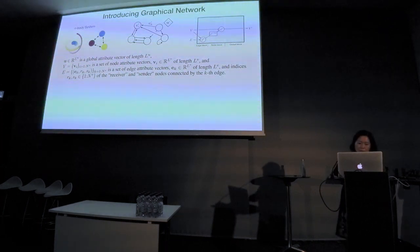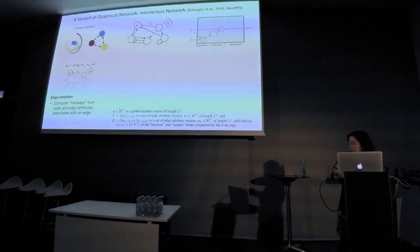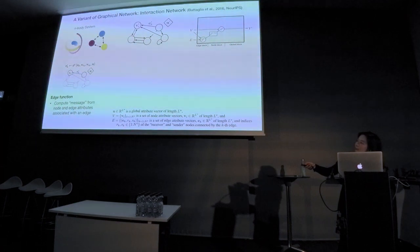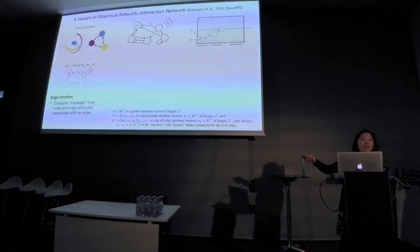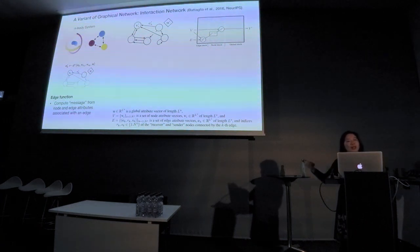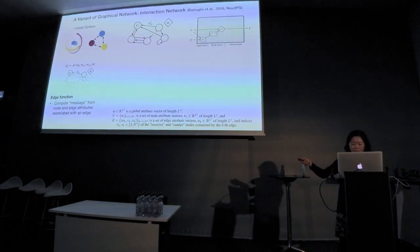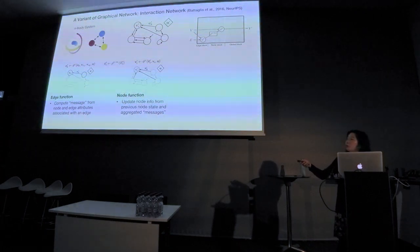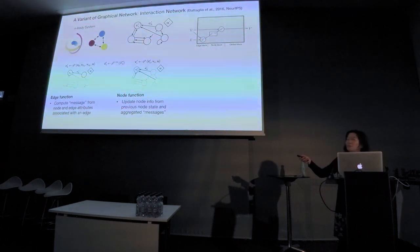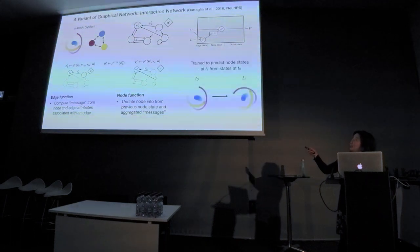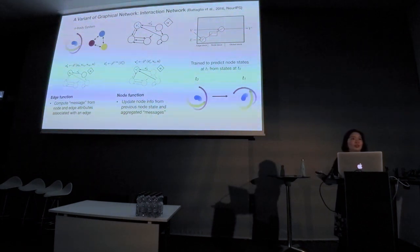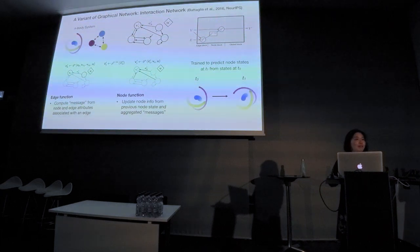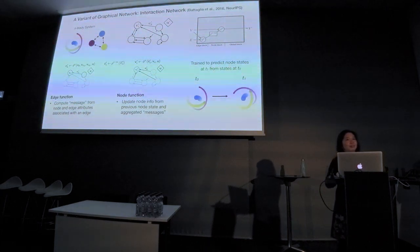Let's see how we actually do this. We first consider the edge function, which computes the message from the node and edge attributes associated with an edge — basically calculating the forces. For example, G = M1·M2 / R² — you just calculate that. Then you have the node function: summing up all the forces from all the different nodes. You then train the system and backpropagate to get the correct next step.